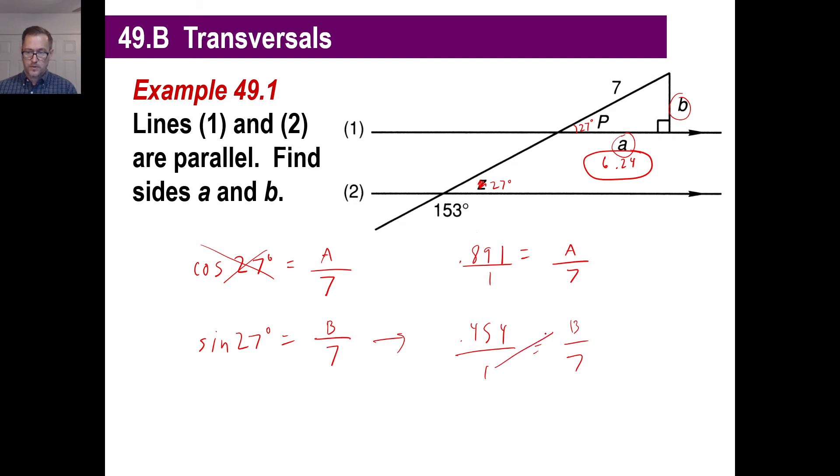And, again, you can do the same thing here. I got 0.454 equals B over 7. And then, of course, you know, cross-multiply. You just need to multiply whatever you get there times 7 again. I got, we'll call it 3.18. So, I got 3.18. There we go.